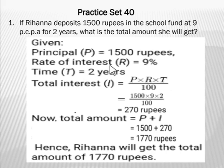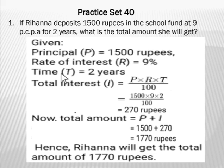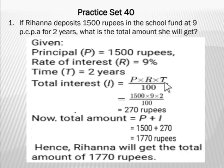For how much time has she deposited the money? It is for two years, so time T equals two years. We know the formula for finding total interest: I = P × R × T ÷ 100. In this formula we will put the value of principal, rate, and time, and solve it.